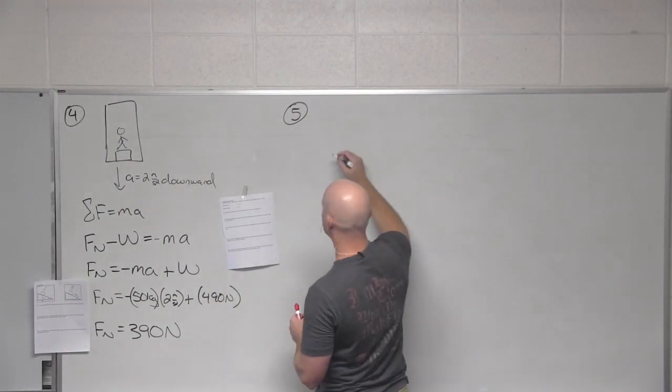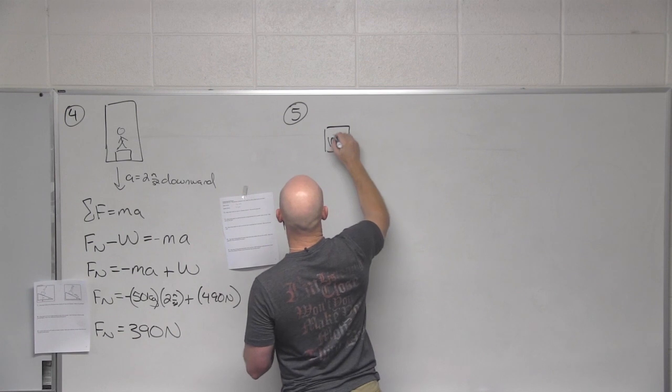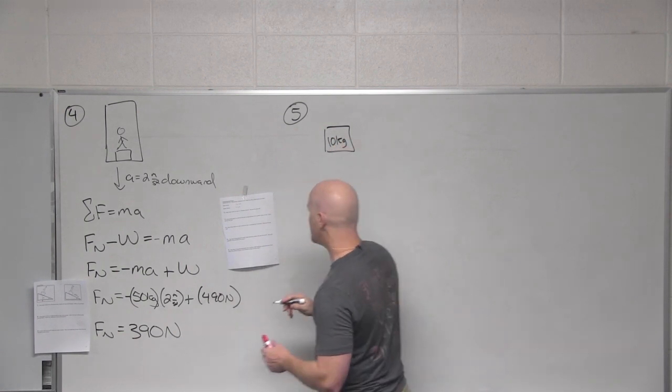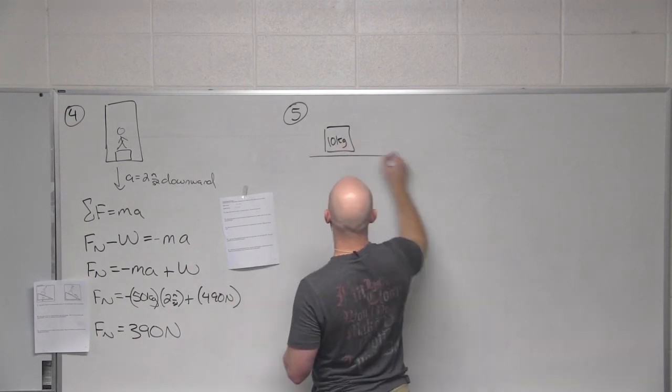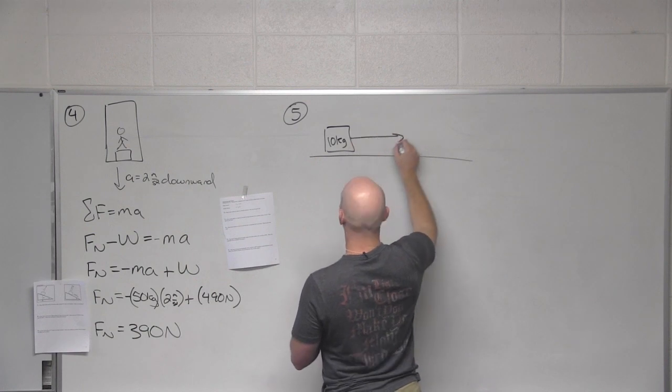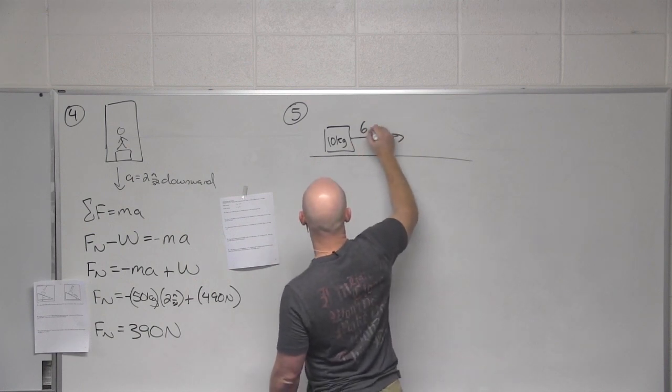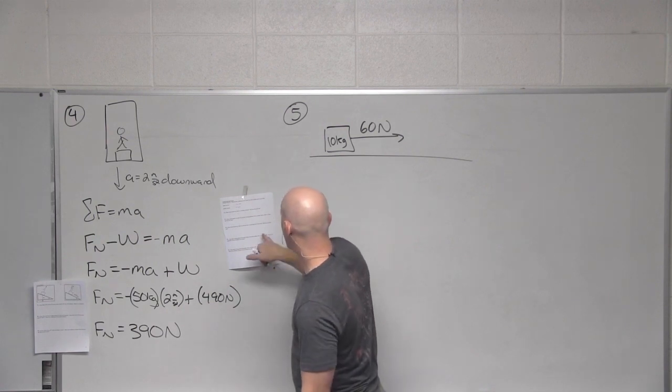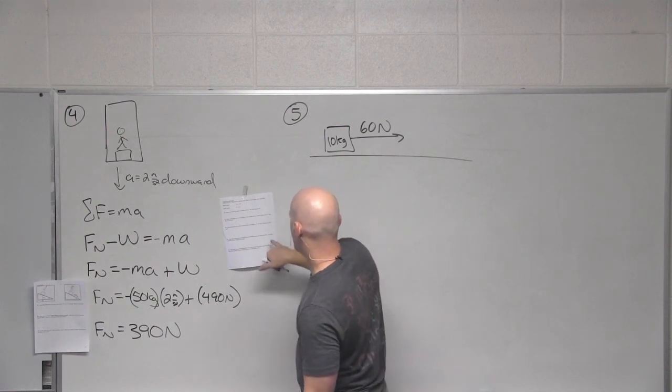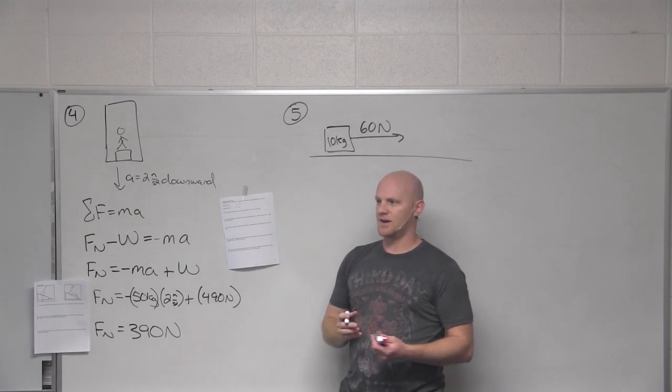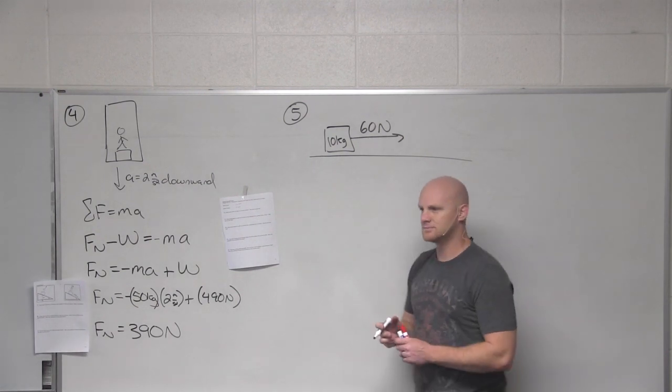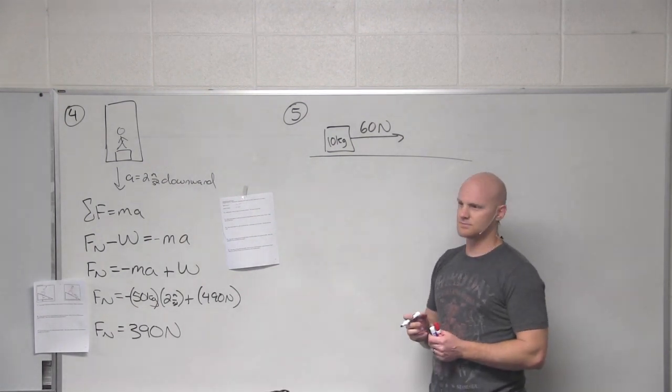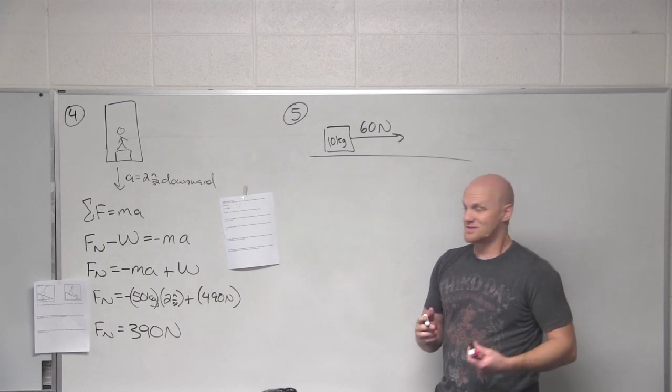Number 5. A 10-kilogram object is being pulled horizontally along a frictionless surface with a net force of 60 newtons. What is the magnitude of the acceleration of the object? What is this simply an application of? The second law. Yeah, Newton's second law.